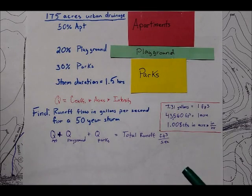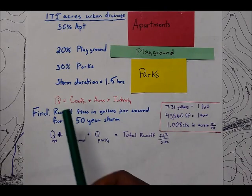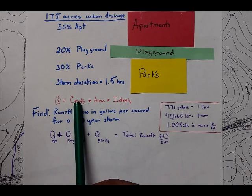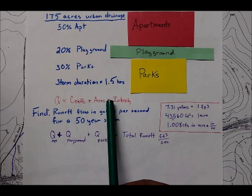Some key things to keep in mind is first the equation. The flow is equal to the coefficient times the acreage times the intensity.